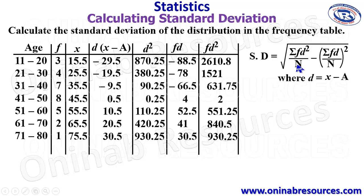We then go ahead to carry out the sum. N means the total population of the distribution, which is the same thing as summation of f. We are going to have it as 3 plus 4 plus 7 plus 8 plus 5 plus 2 plus 1, and that will give us 30. The next is fd. We have fd here. Negative 88.5 minus 78 minus 66.5 plus 4 plus 52.5 plus 41 plus 30.5 gives negative 105. And then the last column will be added also. 2,610.8 plus 1,521 plus 631.75 plus 2 plus 551.25 plus 840.5 plus 930.25 gives 7,087.5.